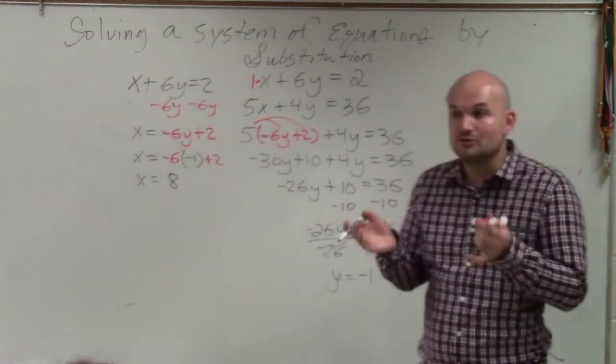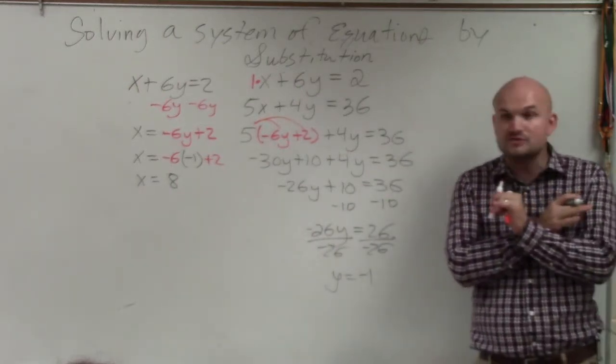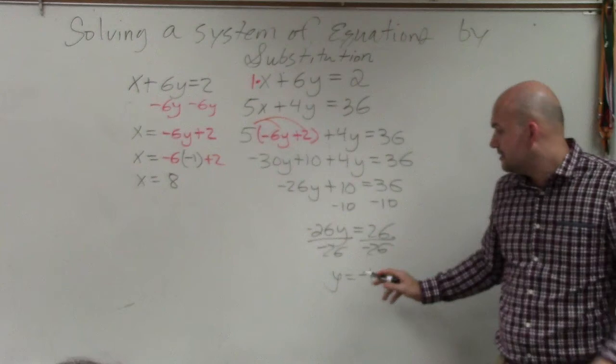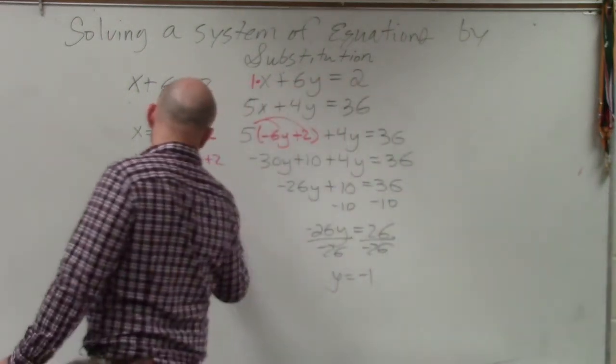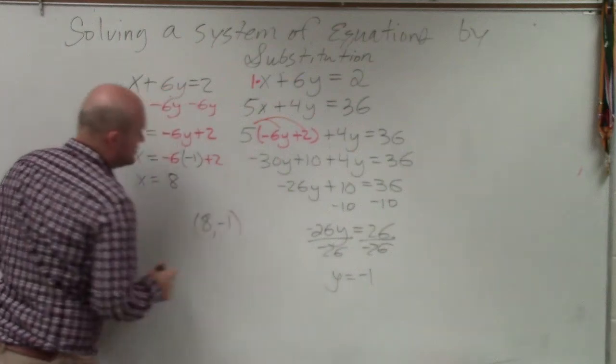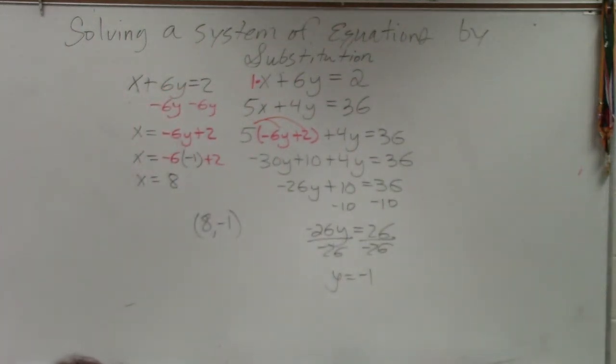So now, remember the solution is the x and the y coordinate. For a solution of a system of two equations, you've got to have two variables. So I have a coordinate point 8, negative 1. If they ask you to write it as a coordinate point, you just do x comma y. And that is it.